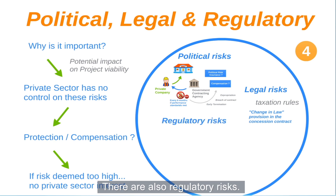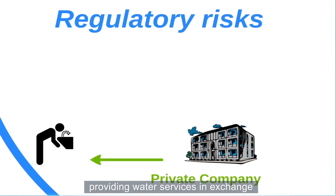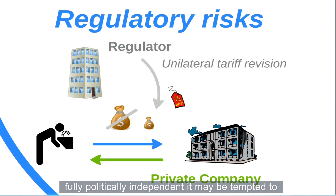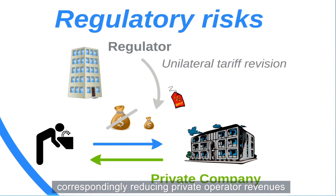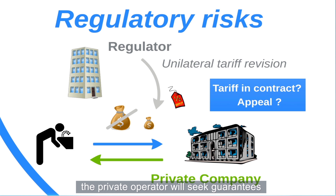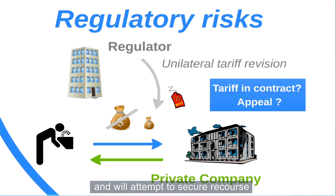There are also regulatory risks. Consider a private operator providing water services in exchange for the right to collect fees from users. If the relevant regulatory authority is not fully politically independent, it may be tempted to reduce tariffs in order to please the public, correspondingly reducing the private operator's revenues and putting the financial viability of the entire project at risk. To mitigate this risk, the private operator will seek guarantees regarding the setting of tariffs — perhaps by including a tariff revision formula directly in the contract — and would attempt to secure recourse against adverse action by the regulator.